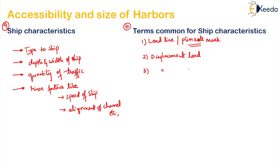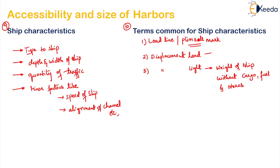The third term is displacement light. The weight of the ship in kilonewtons without cargo, fuel, or stores is known as displacement light. To summarise: displacement load is the weight of the ship fully loaded to the load line, while displacement light is the weight of the ship without cargo, fuel, and stores.